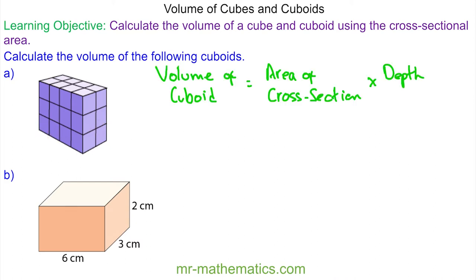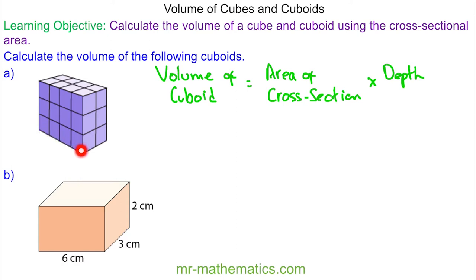A cuboid has three possible cross-sections. There is one here, where the depth is in this direction. There is one at the top, where the depth is in the vertical direction. And there is a cross-section here, where the depth is going backwards.